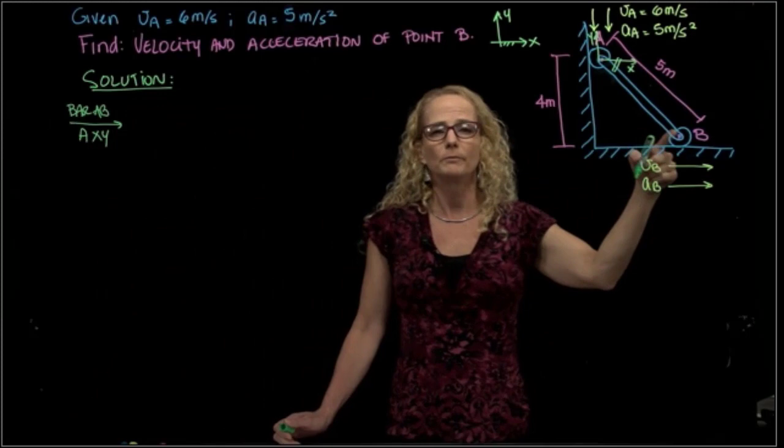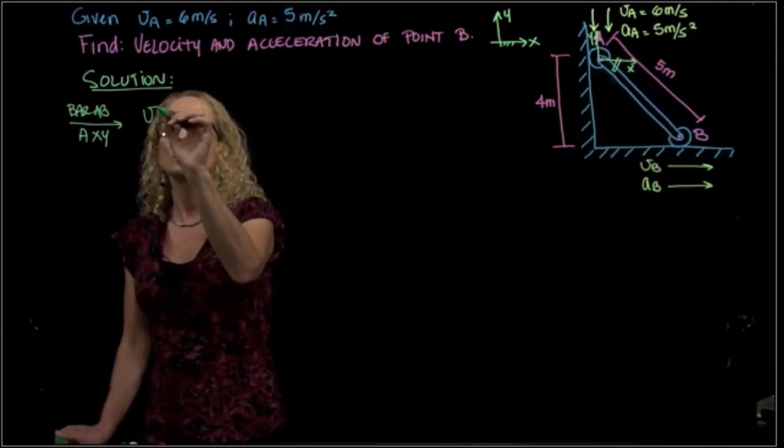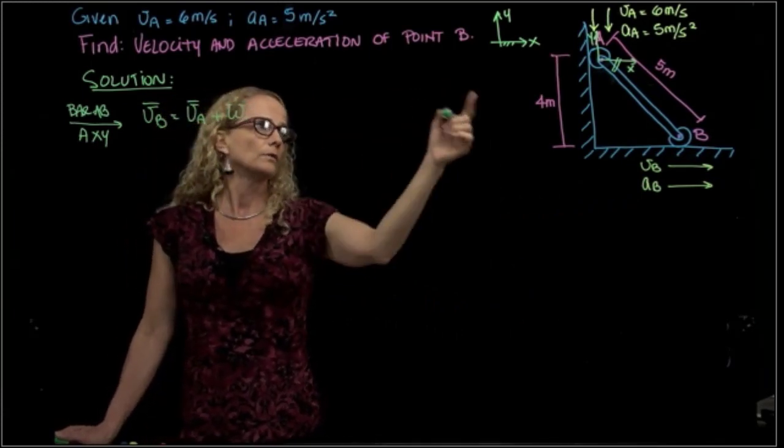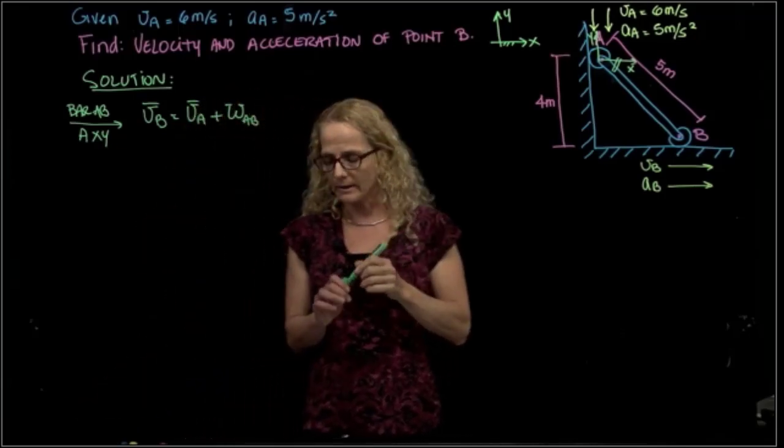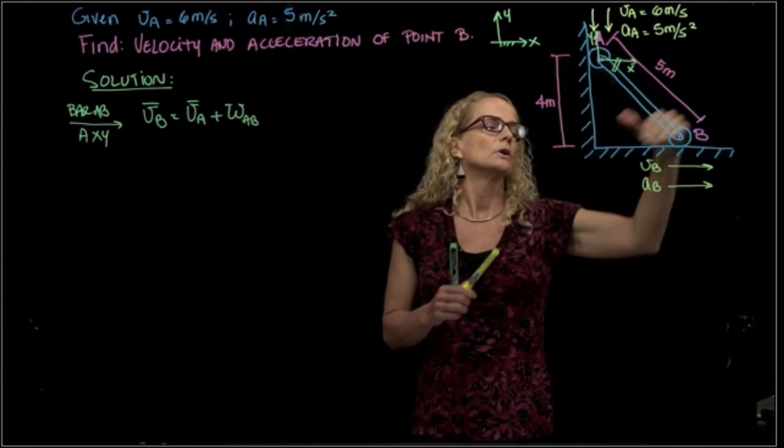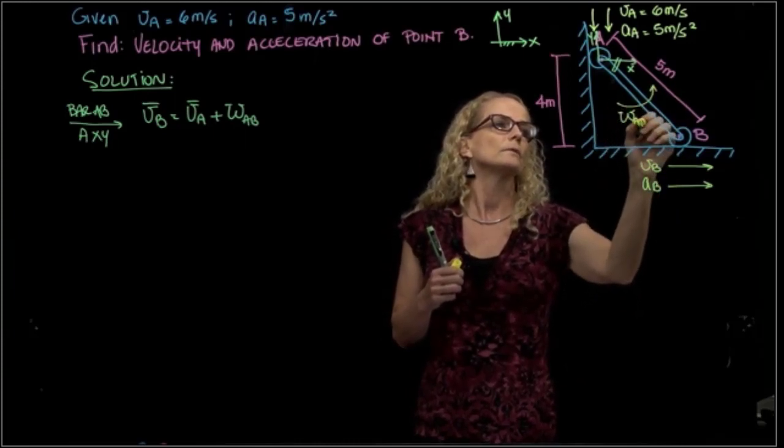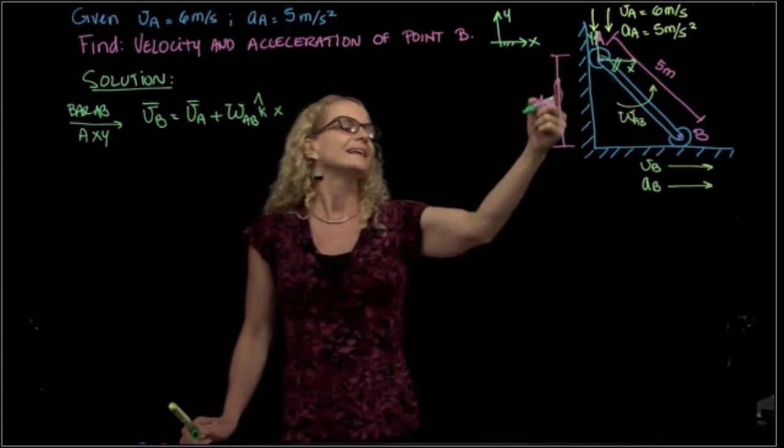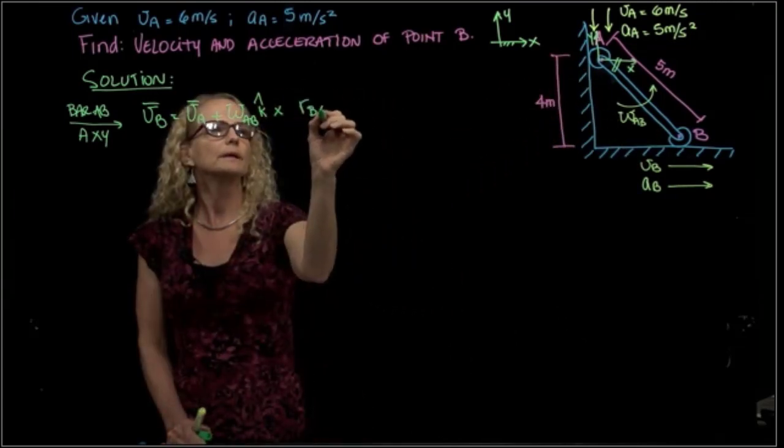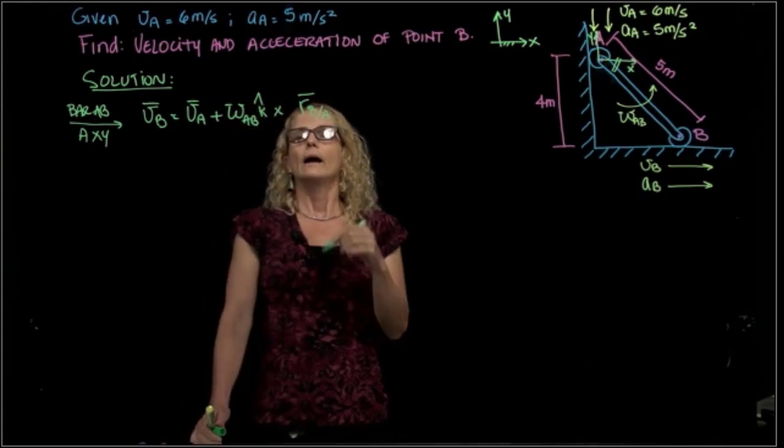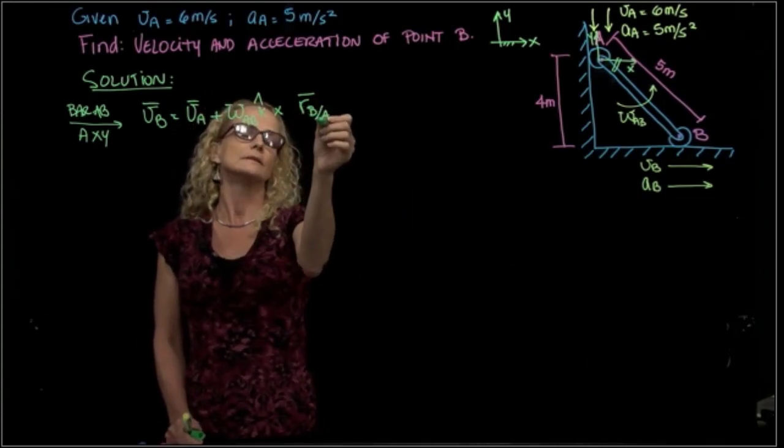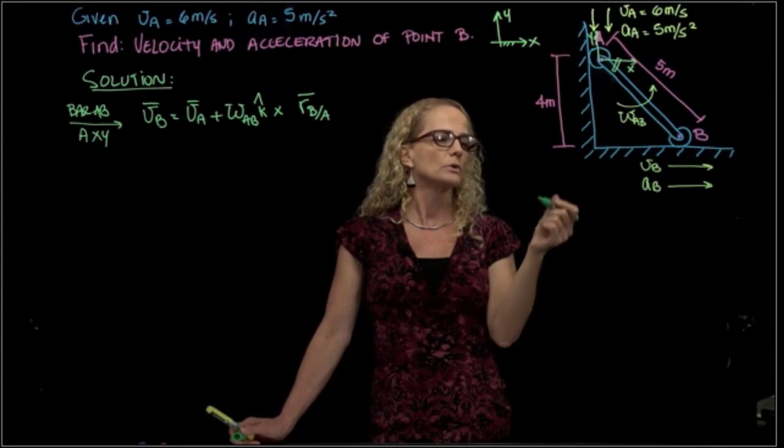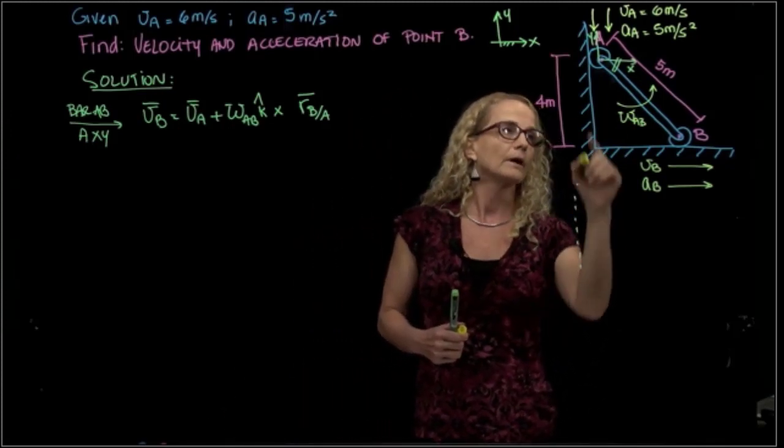We are going to calculate the velocity of B using that system. As you recall, the velocity of B equals velocity of A plus angular velocity of that bar AB. And I have to give a direction, so this is rotating in this direction, so this is positive in K, cross the distance from B to A. We call that distance B to A. Velocity of A is given, and we have this distance. We know it's 5, but we need to decompose it in the system that we chose.